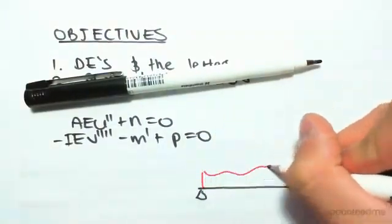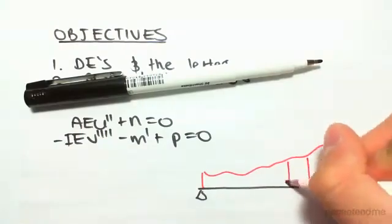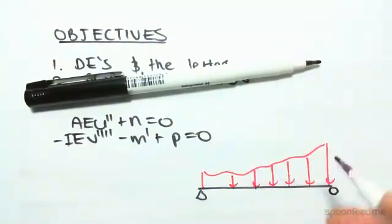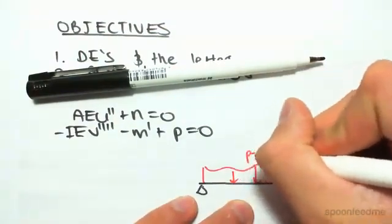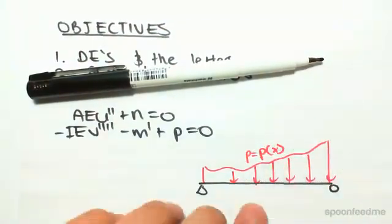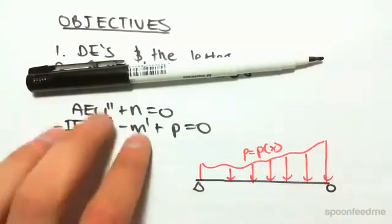So we could have any function of UDL. This is obviously a function of x, the load, but we just call it P. So P equals P of x. Okay, so P is just the linear load. That's that term there.